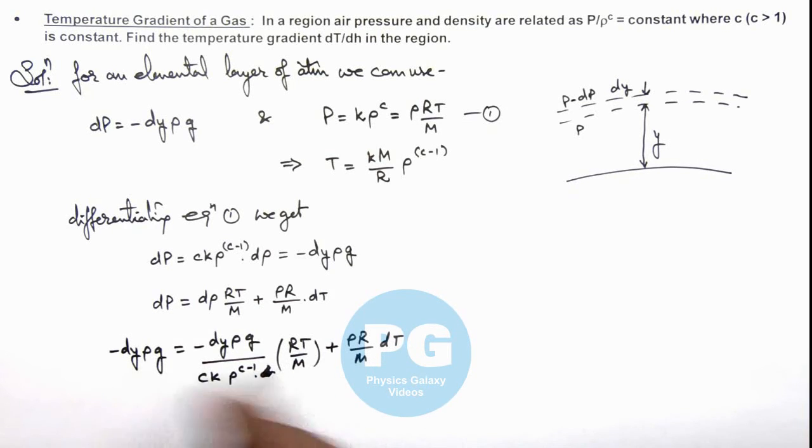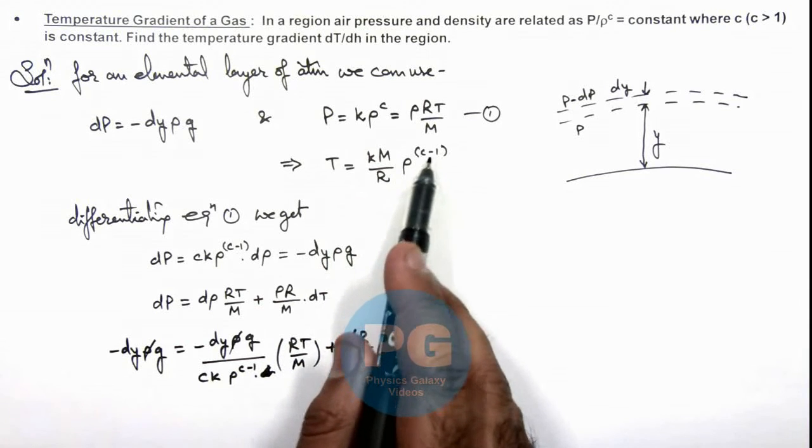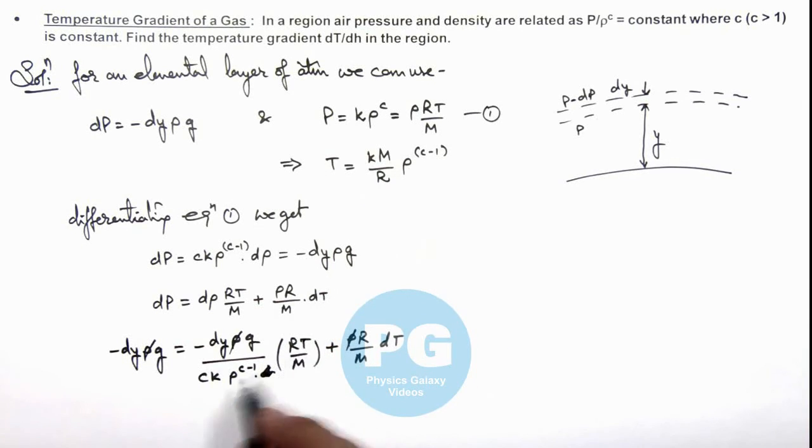Here if you have a look carefully, the value of ro gets cancelled out from the equation. And the value of temperature is k m ro to power c minus 1 by r. So this temperature will also get cancelled out with k m ro to power c minus 1 by r. So this t n r m ro k can be cancelled out.